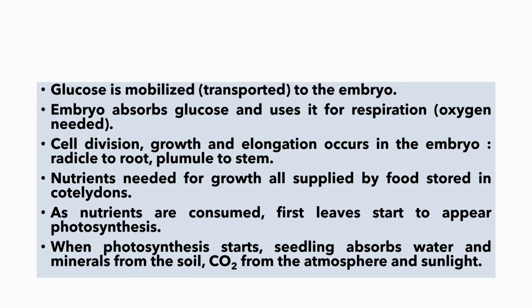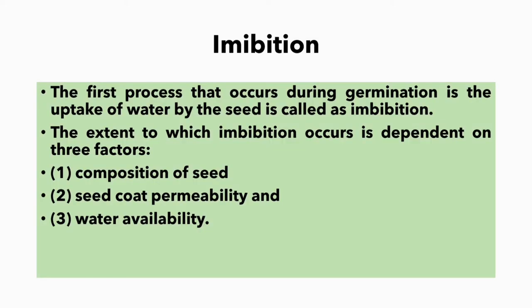The glucose is mobilized to the embryo and it is used for respiration. Cell division, growth and elongation occurs in the embryo — that is radicle to root and plumule to stem. Nutrients needed for growth are all supplied by food stored in the cotyledons. As nutrients are consumed, first leaves start to appear. When photosynthesis starts, seedlings absorb water and minerals from the soil, carbon dioxide from the atmosphere, and sunlight.